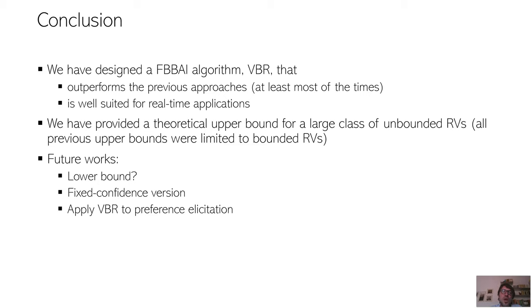In conclusion, we have designed a new fixed budget best arm identification algorithm, VBR, that outperforms the other approaches in almost all the cases, and is well suited for real-time applications. We also provided theoretical upper bound that holds for unbounded random variables, like sub-Gaussian distributions, and this is the first result. All the previous upper bounds were limited to bounded random variables.